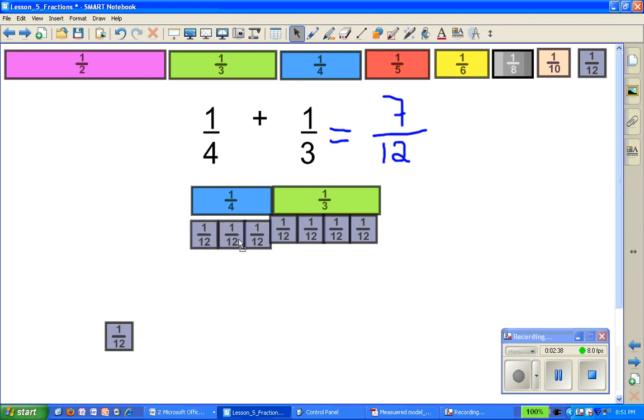So without doing any fancy common denominator multiplication I can see graphically that 1/4 and 1/3 is the same as 7 twelfths.